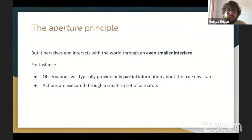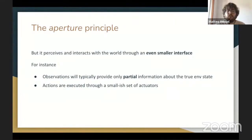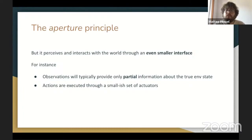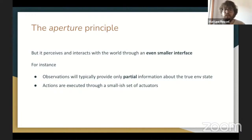The second assumption is sometimes referred to as the aperture principle. This means the agent is not just small compared to the world, but it perceives and interacts with the world through an even smaller interface. At any point in time, the agent's observations will typically capture only a tiny portion of the environment's complexity. For instance, a physical robot may perceive the world through a camera and some sensors about position or velocity, but it won't have full knowledge of everything happening in the universe. Similarly, the agent's actions will typically be fundamentally limited — performed via a small set of actuators with limited power.